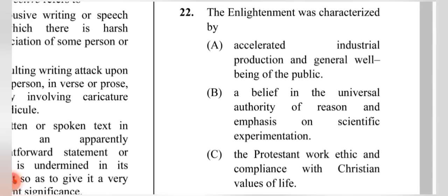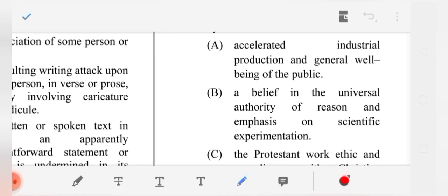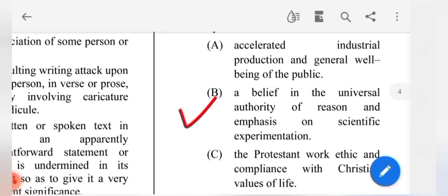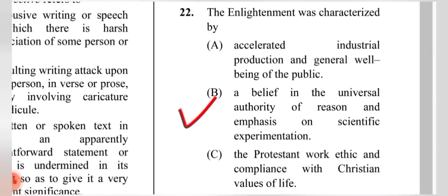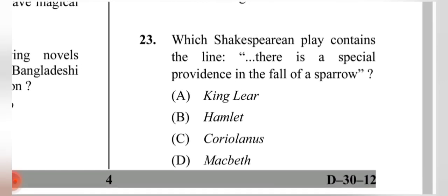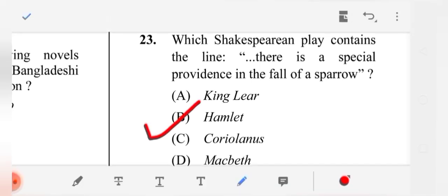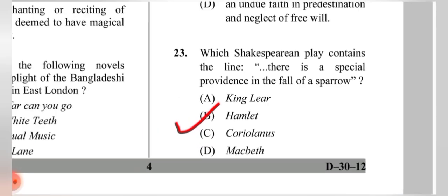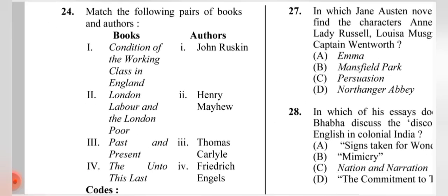Question 22: The Enlightenment was characterized by — the correct answer is (B) a belief in the universal authority of reason and an emphasis on scientific experimentation. Question 23: Which Shakespeare play contains the line 'There is a special providence in the fall of a sparrow'? The correct answer is (B) Hamlet.